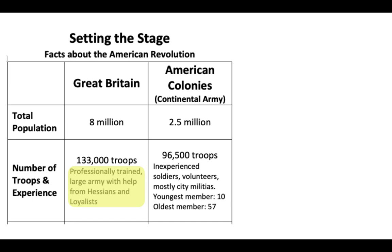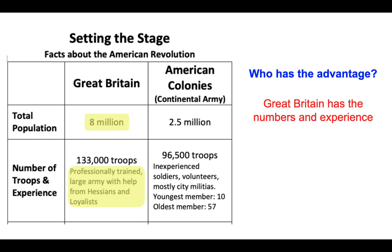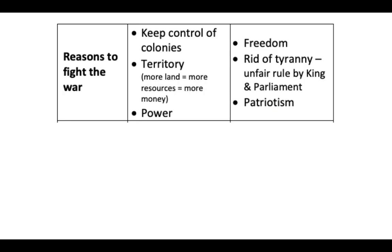Even though Great Britain largely outnumbered the colonies, the number of troops was relatively close: 133,000 for Great Britain compared to 96,500 for the American colonies. Great Britain's troops were professionally trained, with help from Hessian German mercenaries and Loyalists. The American colonies were largely inexperienced volunteers — mostly city militias, farmers, indentured servants, slaves, and merchants — not a professionally trained army. However, they knew the land much better than the British. The youngest militia member was 10, the oldest was 57.